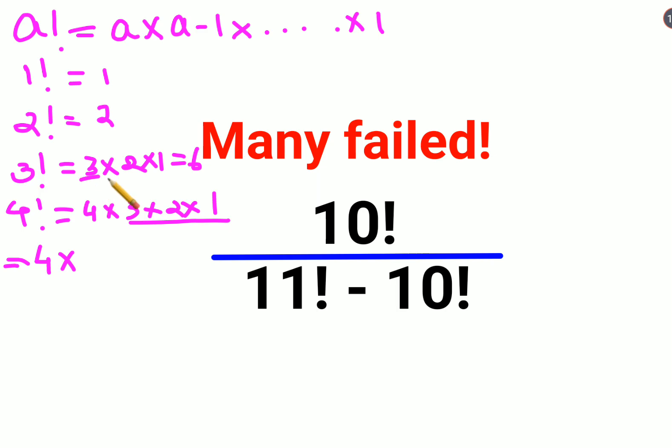Now if you see, this entire thing is getting repeated, so I can directly write this as 3 factorial. So now from here we have understood that n factorial can be written as n into n minus 1 factorial.